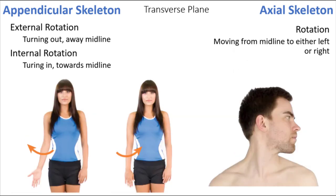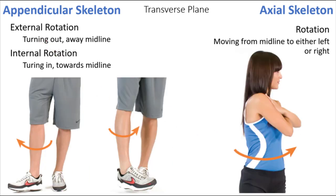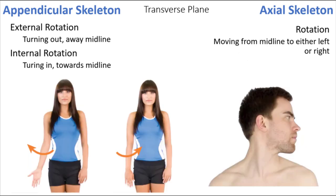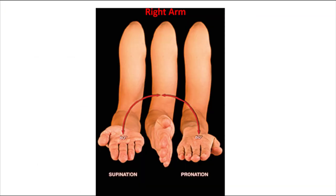Cervical rotation turns the head left or right. For the shoulder, internal-external rotation is typically depicted at 90 degrees of flexion to truly show the shoulder motion — otherwise turning the hand in or out from neutral could also be coming from the wrist. Forearm rotation gets its own special consideration.